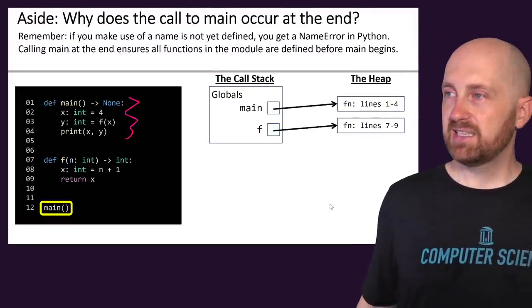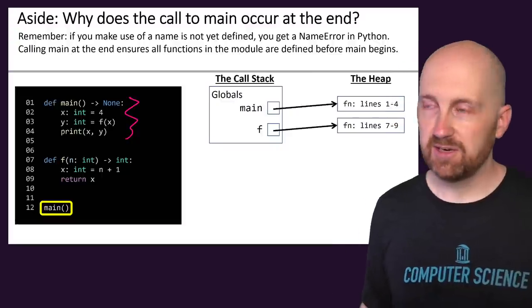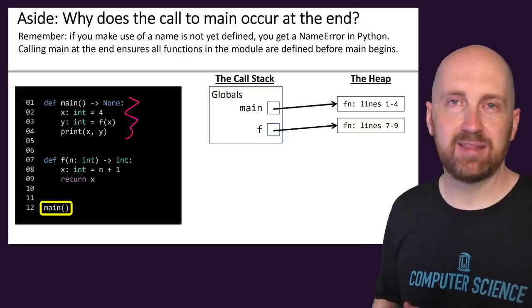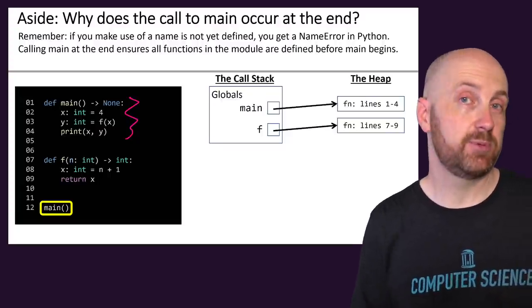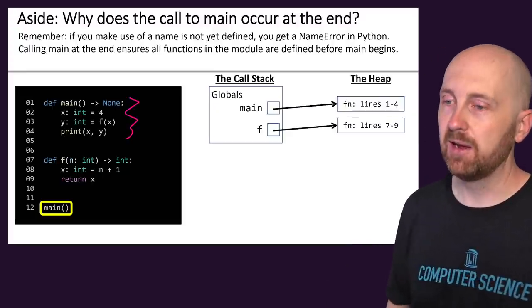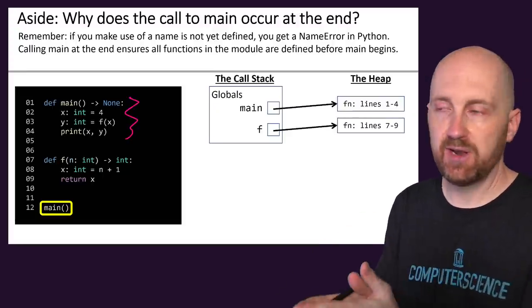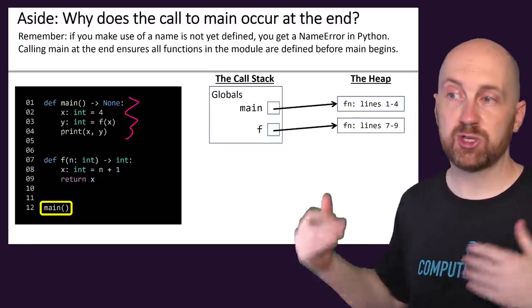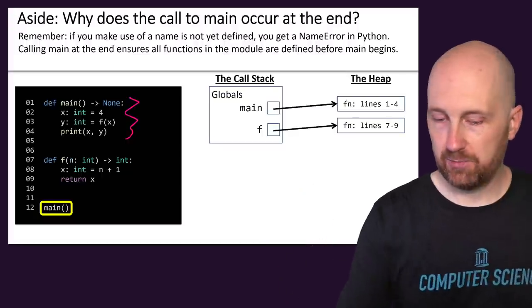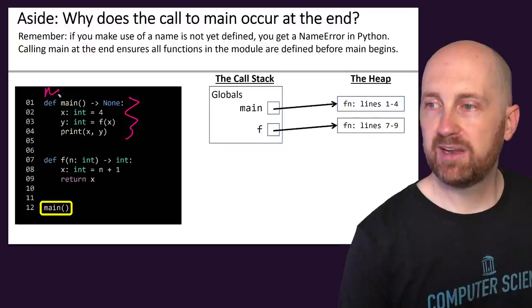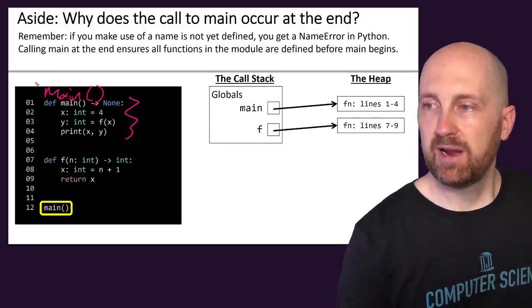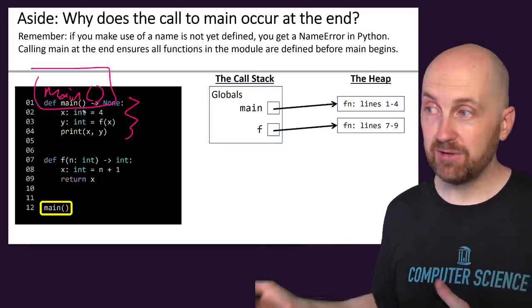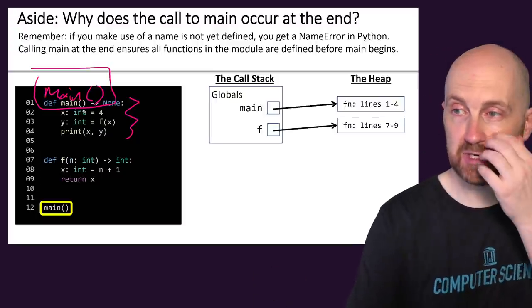Before we get into this function call, let's address one thing: why do we have the function call to main at the very end of our programs? It's because of this exact phenomenon — we need these names to be defined. We need our functions to be defined before we start evaluating our main function. If we had written the call to main above the definition, the program would have evaluated that call first before reaching the definition, and the name main would not have been bound to anything in the call stack — we would have had a name resolution error. So the reason we put the main call at the very end is so that our functions are defined before we evaluate it.